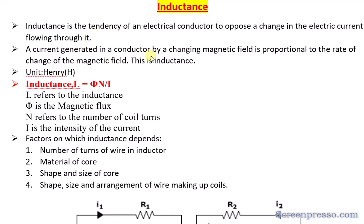A current generated in a conductor by a changing magnetic field is proportional to the rate of change of that magnetic field. So if we change the magnetic field, a proportional current will be generated. This is the basic idea of inductance.